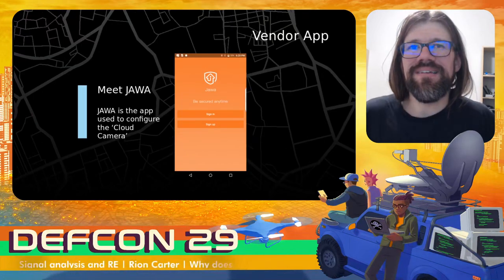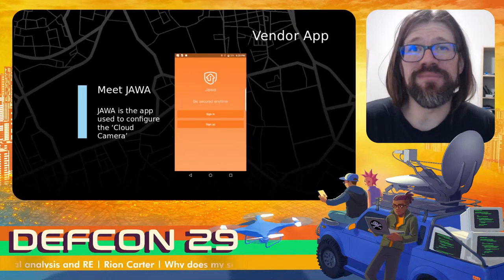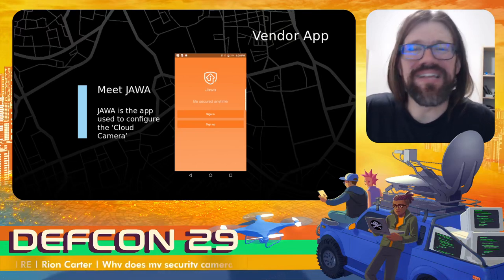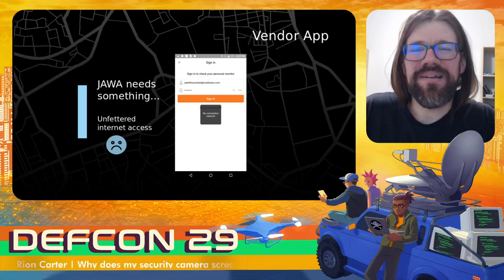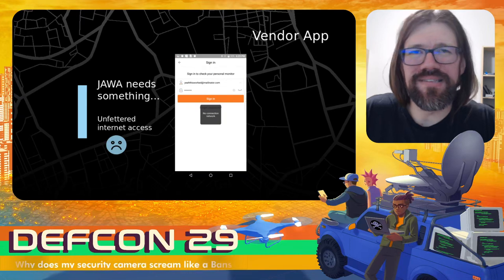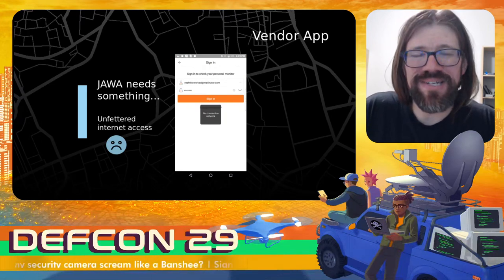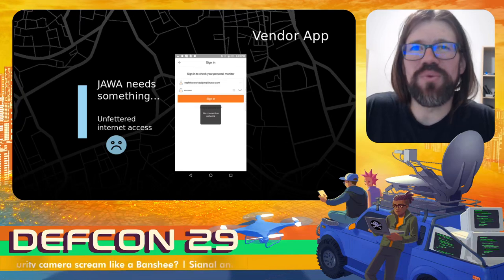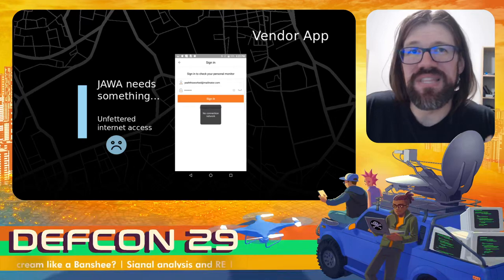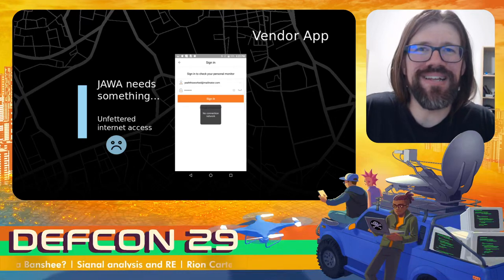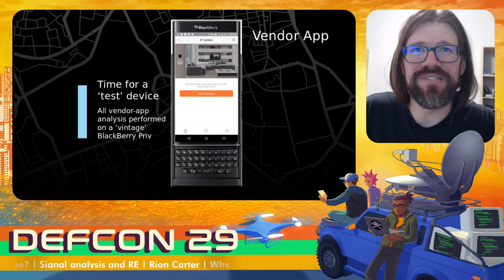This is the vendor application that comes with the camera — it's called Jawa. It's used to configure the cloud camera. However, I wasn't really a fan of having to use this proprietary cloud-locked application. Jawa requires an internet connection, and it also requires a username and password to be configured with this cloud setup. That made me a little frustrated and incentivized me to poke around some more.